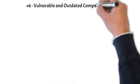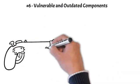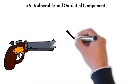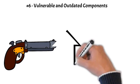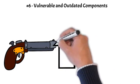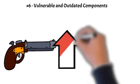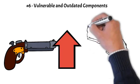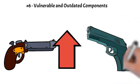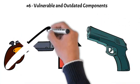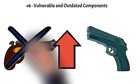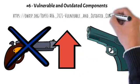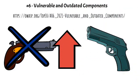Number 6: Vulnerable and Outdated Components. Previously titled 'Using Components with Known Vulnerabilities,' it is number 2 in the top 10 community survey, and also had enough data to make the top 10 via data analysis. Moving up from number 9 in 2017, it is the only category not to have any CVEs mapped to the included CWEs, so default exploit and impact weights of 5.0 are factored into their scores.